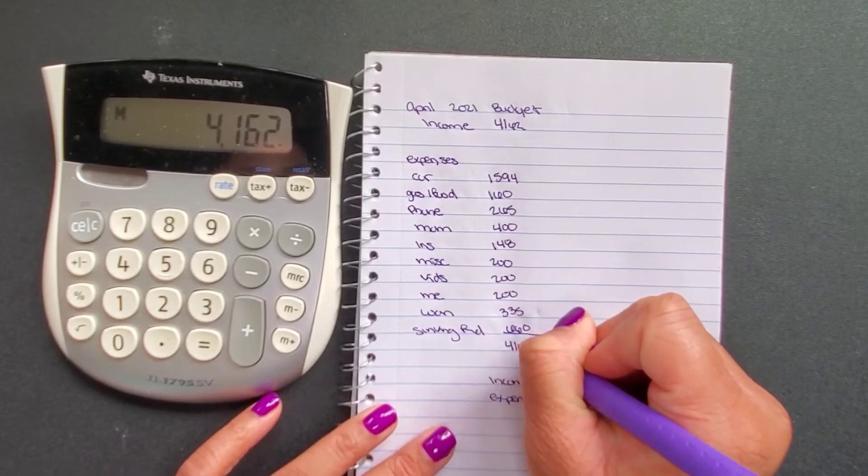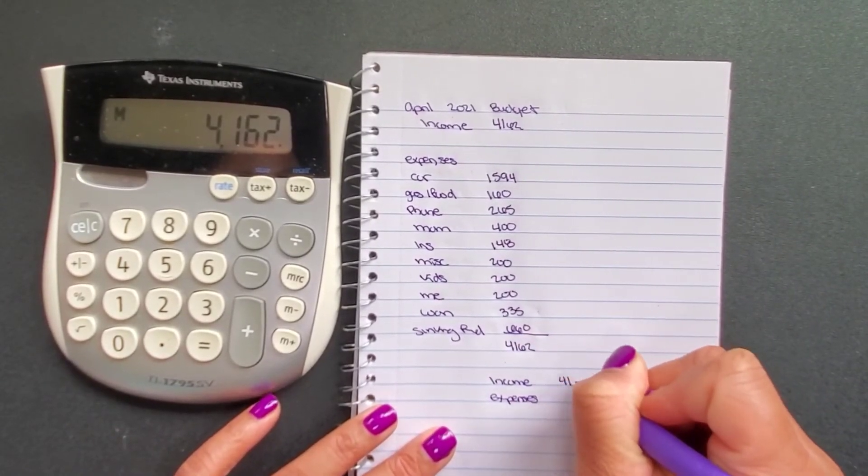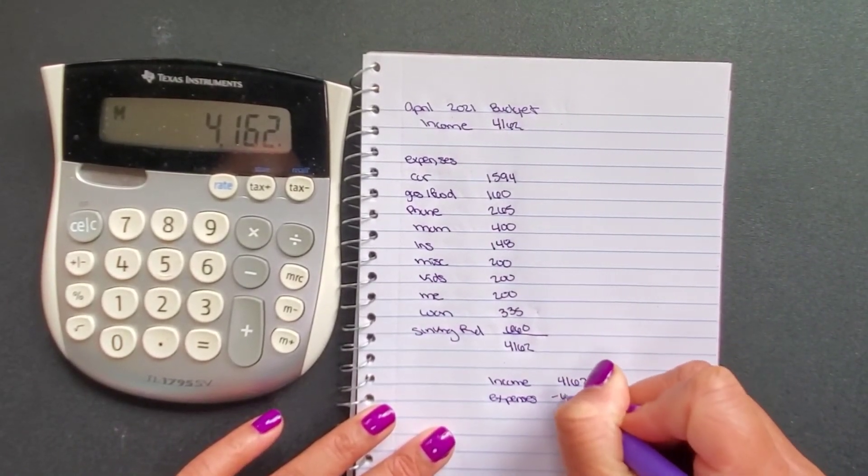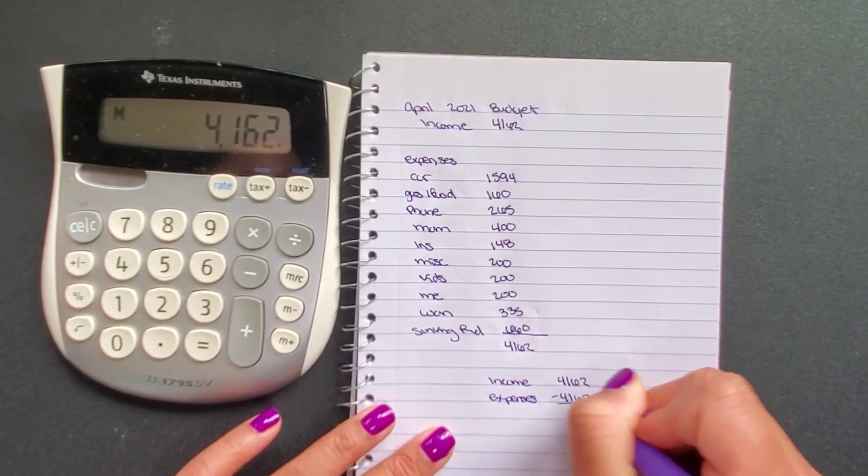$4,162. That is perfect. We subtract that from my income. We are equaled out to zero.